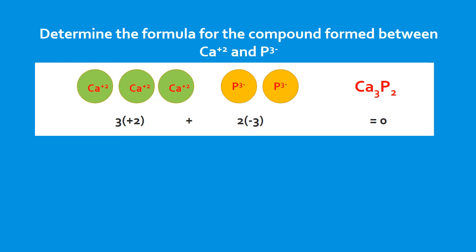This takes us to the end of the lesson. We talked about ions, monatomic and polyatomic ions, how ions are formed, cations and anions, and the compounds formed between ions — ionic compounds. The overall charge on an ionic compound is zero because we have equal amounts of positive and negative charges. Until next time — blessings.